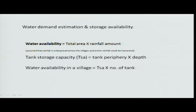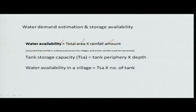Water availability is something we normally assess depending upon the area of the watershed or basin, and what is the rainfall amount occurring there. The rainfall amount is not a fixed value — rainfall varies in both space and time, and those space and time variations need to be ascertained before we start the analysis.